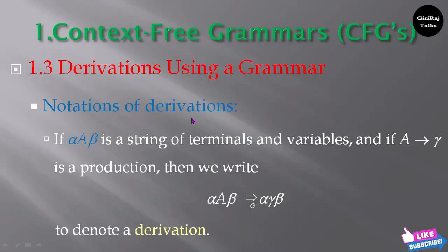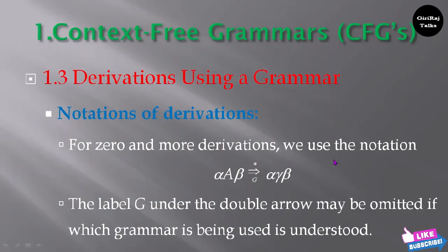Let us see the notations of derivations. If alpha A beta is a string of terminals and variables, and if A → gamma is a production, then we write alpha A beta gives rise to alpha gamma beta to denote a derivation. For zero or more derivations we use the notation alpha A beta gives rise to star G (where G is the grammar) alpha gamma beta.